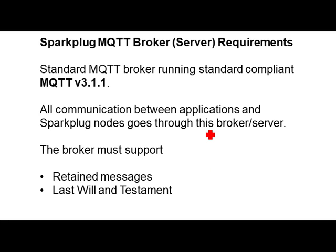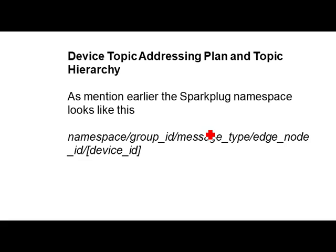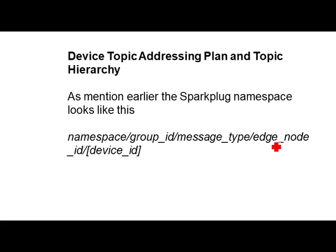All the broker needs to support is Retain Messages and Last Will and Testament. Now let's look at the topic namespace. The structure has: the namespace — with only two options, Sparkplug A and Sparkplug B; a group ID which you choose yourself; a message type, which is defined; an edge-node ID; and a device ID. It makes more sense when we look at an actual example.